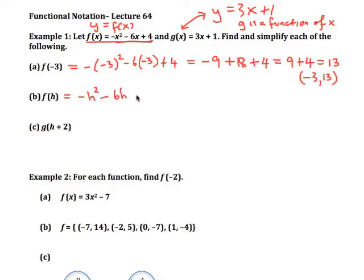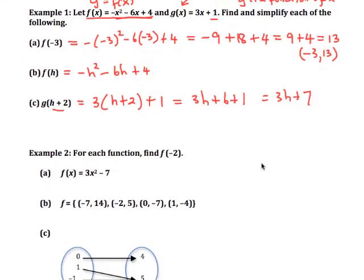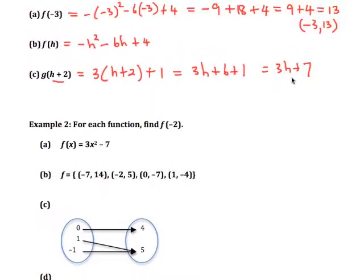What about g of h plus 2? In this case we have h plus 2 as the value that we are applying the process g to. The process of g is 3 times the x value. In this case the x value is h plus 2, so it's going to be 3 times (h plus 2), and then we're going to add the 1. So when I distribute this, 3h plus 6 plus 1, it equals 3h plus 7.